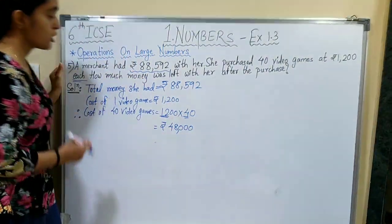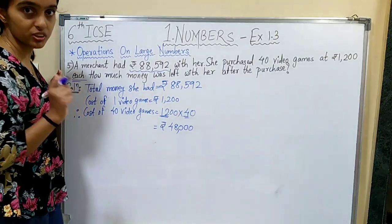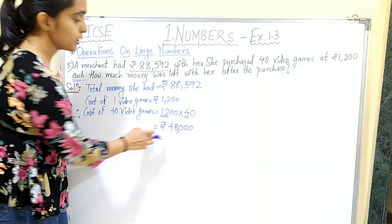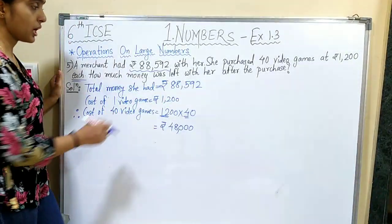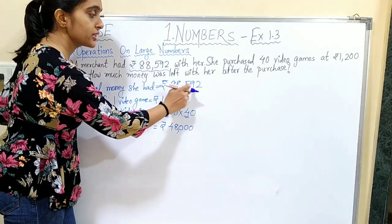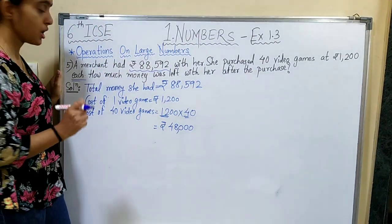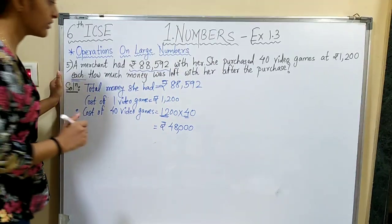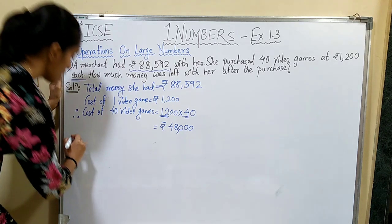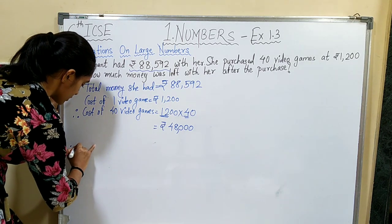The cost of total video games she purchased is Rs. 48,000. She had Rs. 88,592 with her in the beginning. After purchasing the video games, the amount left with her will be Rs. 88,592 minus Rs. 48,000.